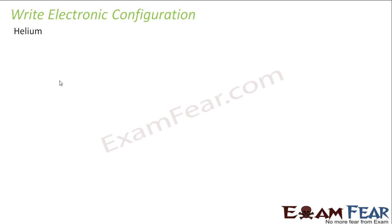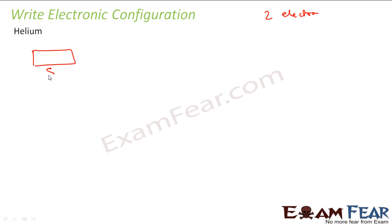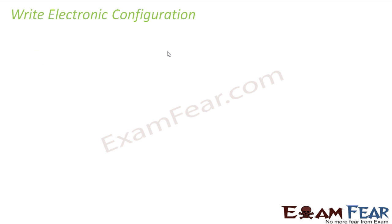Let's take helium now. Helium has two electrons. In the orbital box, this is the 1S subshell. The first electron comes in, and the second electron pairs up. I can also write helium as 1S2. Both representations are correct — this is the orbital representation and this is the normal SPDF notation.